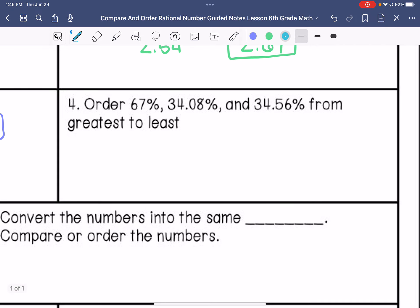Order 67%, 34.08%, and 34.56 from greatest to least. So 67, 34.08, and 34.56. 67 is obviously greater than the 30, so that's my first one, 67%. And then we both have 34%, and then 5 is greater than zero, so we would do 34.56% next, and then 34.08% last.